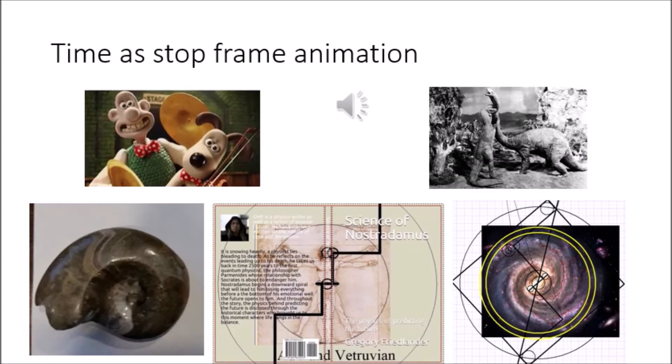But how do we know the AUT definition of time as stop-frame animation is accurate? First, time and space are interchangeable. They have to be the same thing. Second, the math of gravity, force, energy, and dimensional compression work.